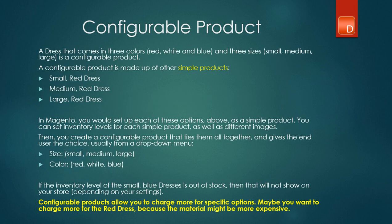The second type of product is what you call a configurable product. For example, think of a dress that comes in three different sizes and three different colors — red, white, and blue, as well as small, medium, and large. A configurable product is made up of simple products. To make a configurable product, you need to add your small red dress, medium red dress, and large red dress, as well as your small blue, medium blue, large blue, and so on. Once you have created these simple products, you can configure them as a configurable product.